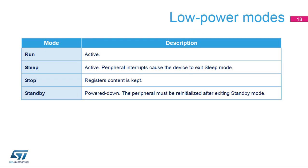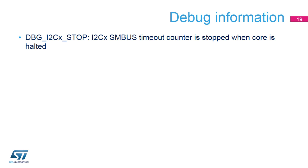The I2C peripheral is active in run and sleep modes. In stop mode, the peripheral clocks are off and the registers' content is kept. In standby mode, the peripheral is powered down and must be reinitialized after exiting standby mode. For each I2C peripheral, a bit is available for debugging purposes in the MCU debug component that can be used to stop the SMBus timeout counter when the core is halted.